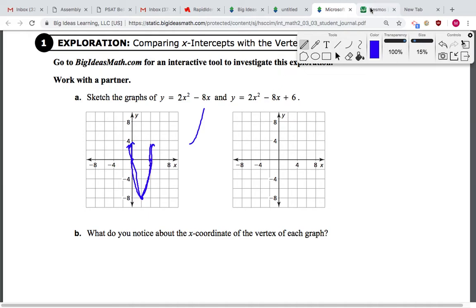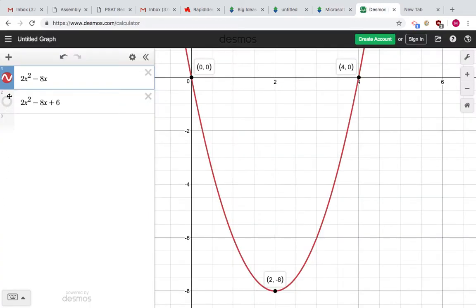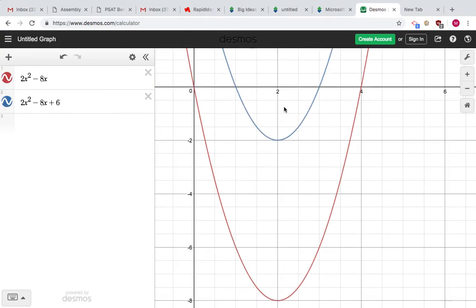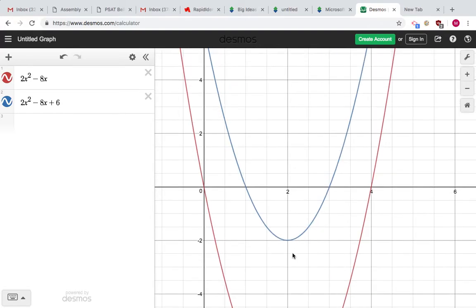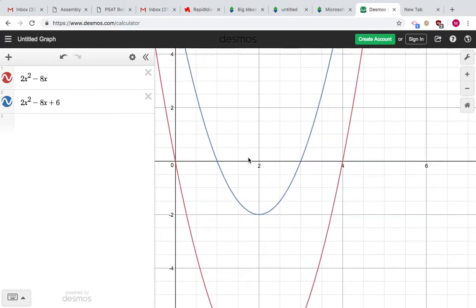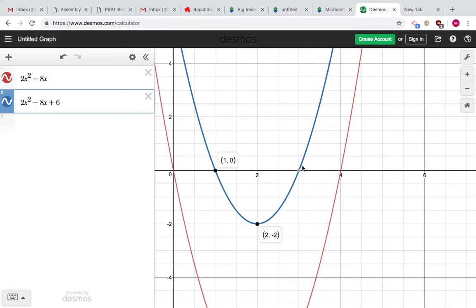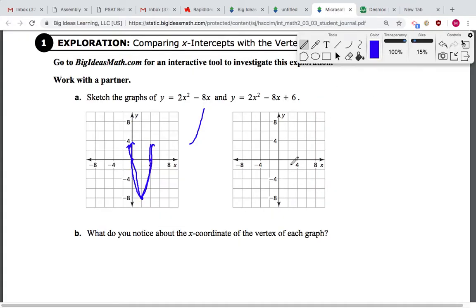And then the other one is 2x squared minus 8x plus 6. So I'm going to go ahead and turn that on. And on Desmos you can move around, move the screen around, so make sure you do that if you need to. 1, 0, 3, 0, and let's see, this is counting by 2, so this would be 1, 0, this would be 3, 0, and this would be 2, negative 2.